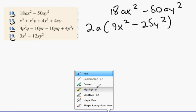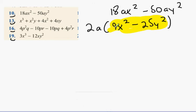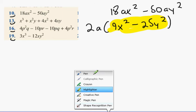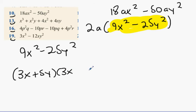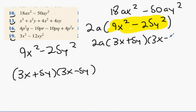Now, does anybody recognize what this is here, just the yellow part? They're both squares, aren't they? So they're going to be the difference of two squares. So what is the difference of two squares? 3X plus 5Y and 3X minus 5Y. Perfect. So what's my answer? 2A into 3X plus 5Y and 3X minus 5Y. You guys alright with that?